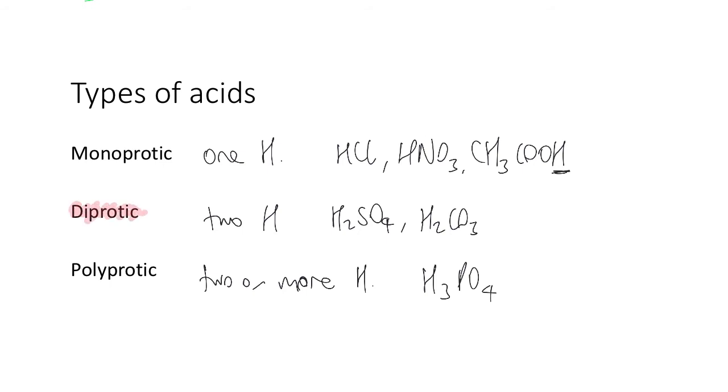Generally they'll tell you it's a diprotic or triprotic acid just to see if you can understand that that means it's going to have a 1 to 2 or a 1 to 3 ratio with any hydroxides that are present. So when you're reading a question, if you see the word diprotic, just remember that gives you the information that you need for the stoichiometric ratio between hydrogens and hydroxides.